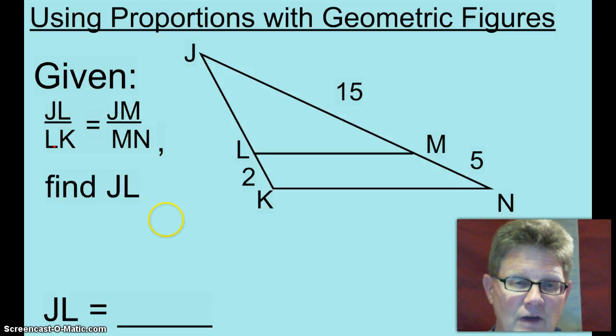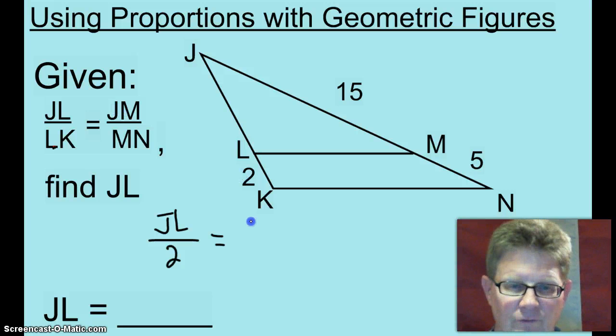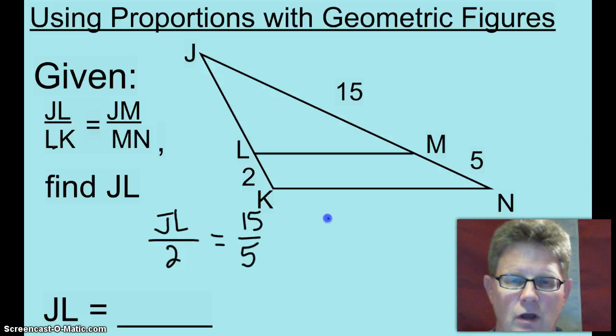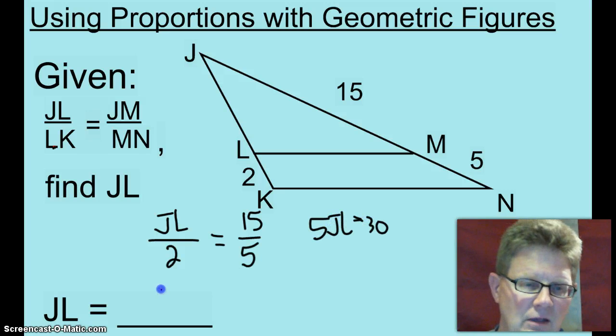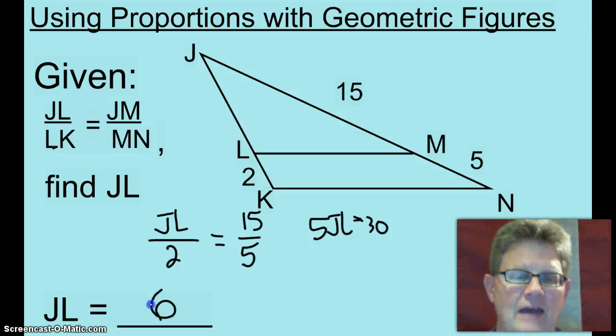JL is what you're trying to find. So JL over LK. How big is LK? LK is two. Equals, how big is JM? That's right, it's fifteen over MN which is five. So cross products says five JLs equals thirty, so JL has to be six. That is how you're going to use proportions with geometric figures.